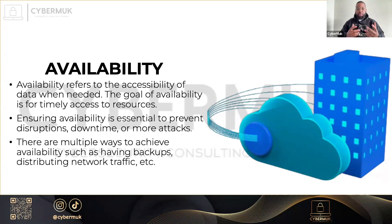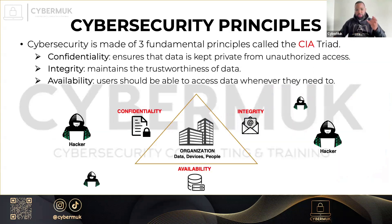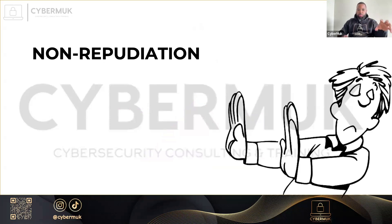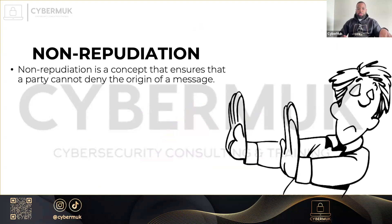To achieve availability, you have backups and distribution of network traffic — you want the resource to always be available to those who need to access it. This prevents downtime and shows reliability. So those are the three elements of the CIA Triad: Confidentiality, Integrity, and Availability. If someone wakes you up at 2 a.m. and asks what CIA means in cybersecurity, you should be able to repeat those three terms.